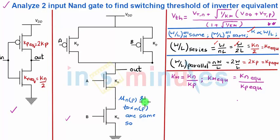Now we know that Kn or Kp in simple words K is directly proportional to W by L and mu N or mu P is mobility of electrons in all the NMOS's is the same and mobility of holes across all the PMOS's is also same and TOX is also same for all the NMOS's and also same for all the PMOS's.